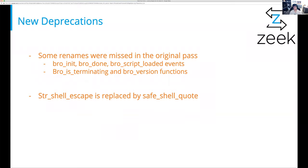New deprecations in 3.0 are things we missed previously — bro_init, bro_done, bro_script_loaded events, and some functions there. Escaping in strings changed slightly: we deprecated the str_shell_escape function and replaced it with safe_shell. str_shell_escape still exists but it's marked deprecated and you should definitely migrate to the new one.